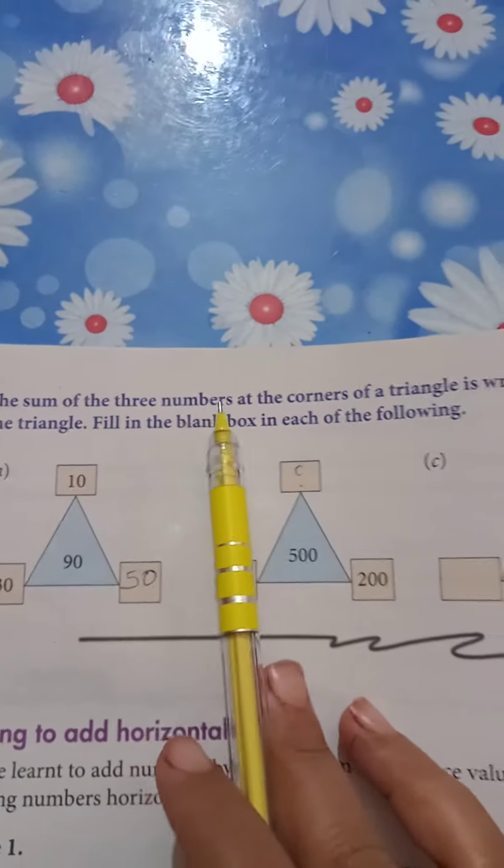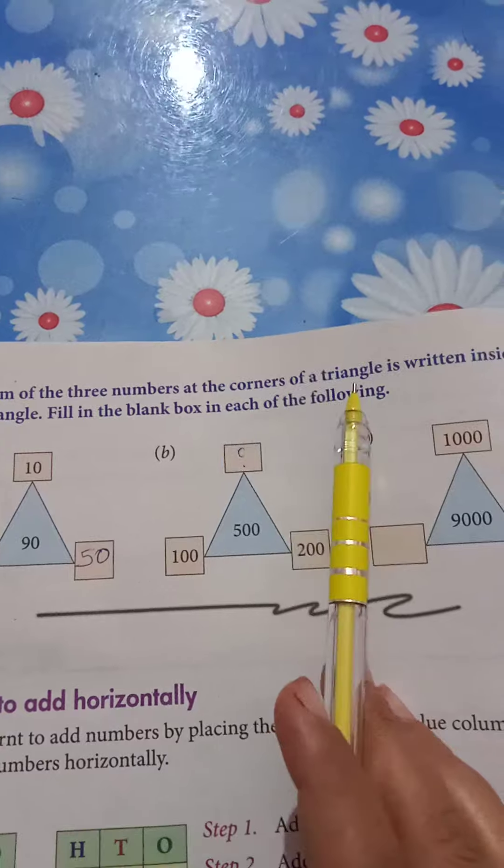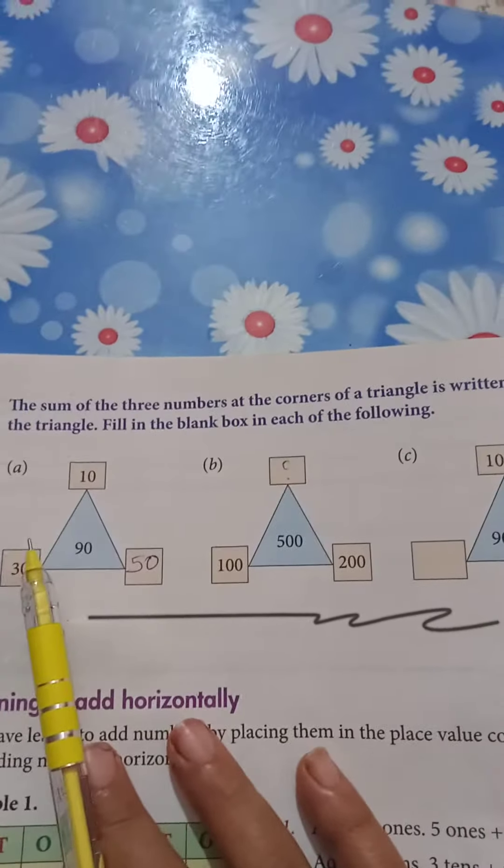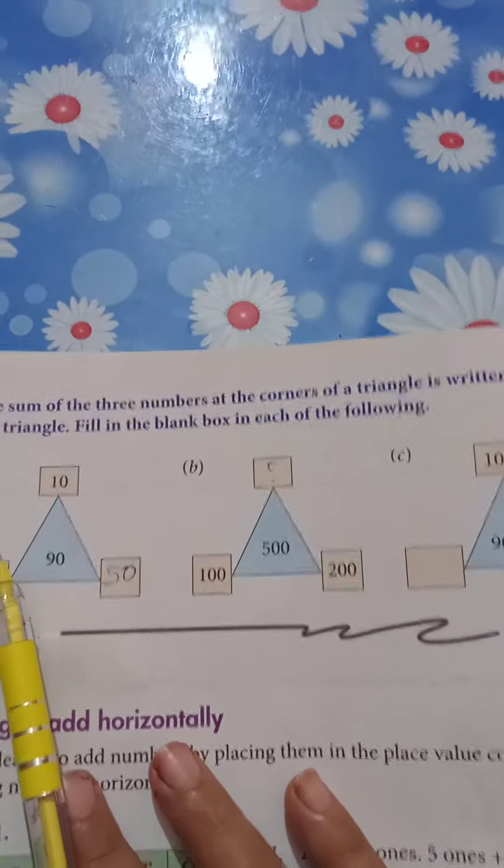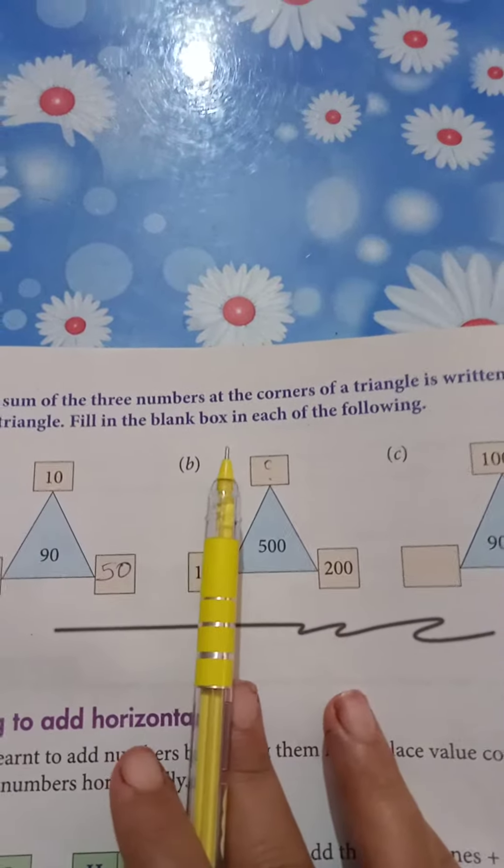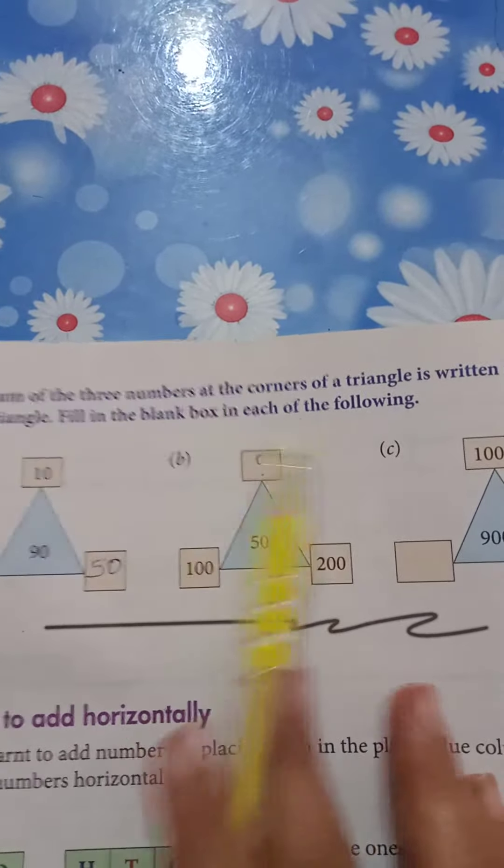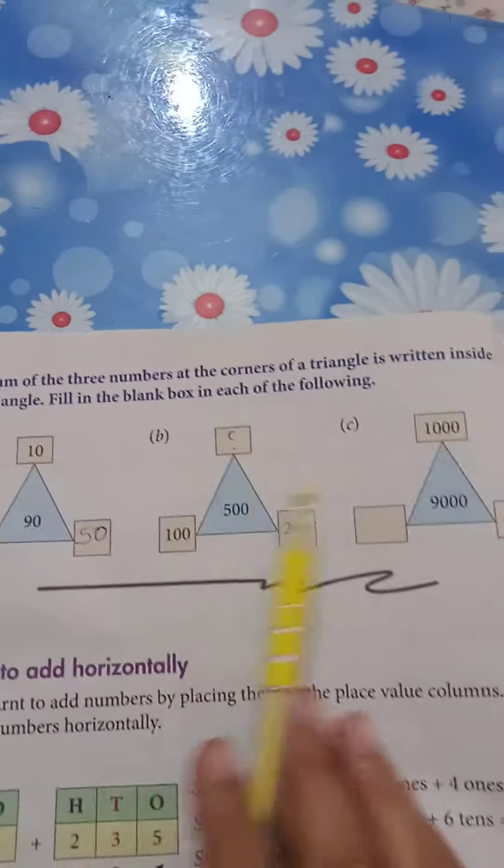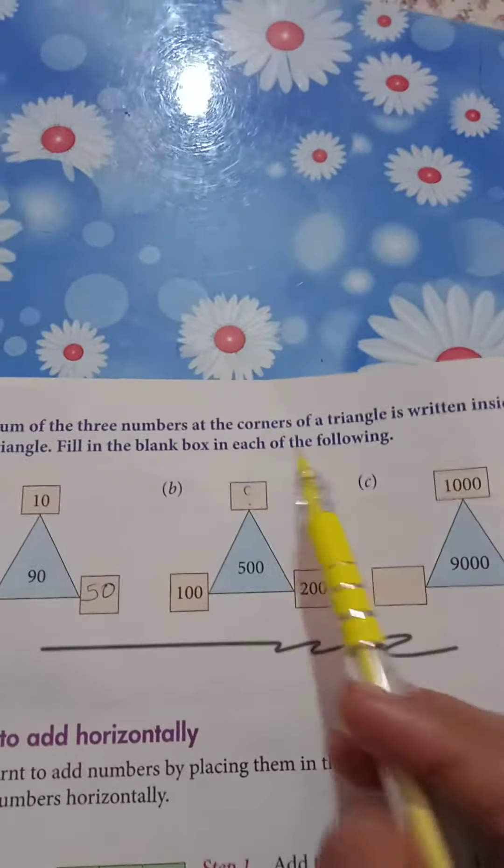The sum of the three numbers at the corner of a triangle is written inside the triangle. Fill in the blanks, fill in the blank box in each of the following. These triangles you have to fill.